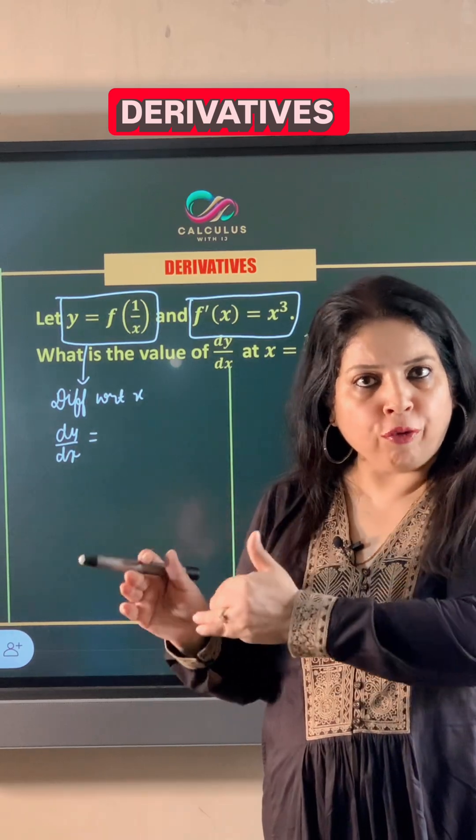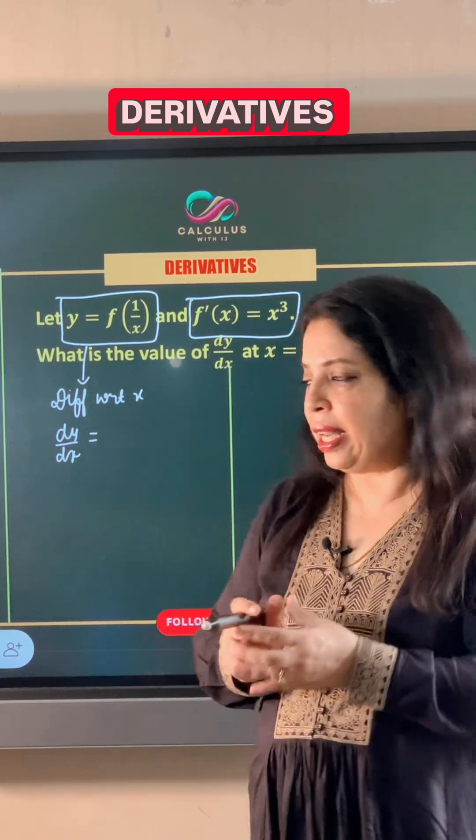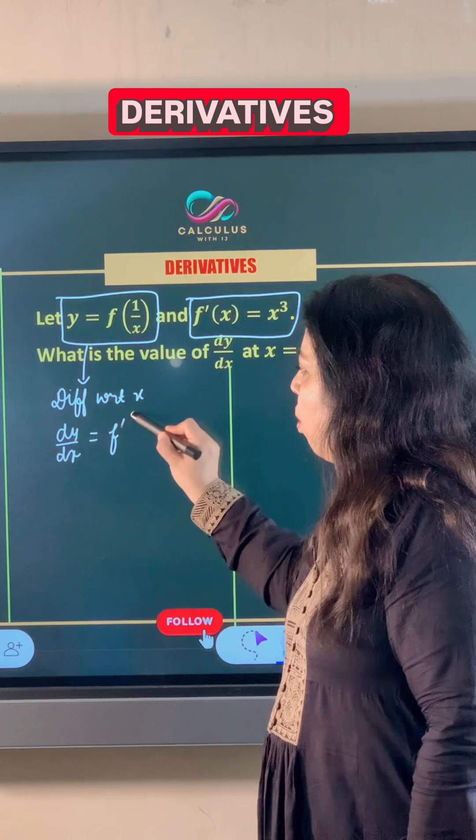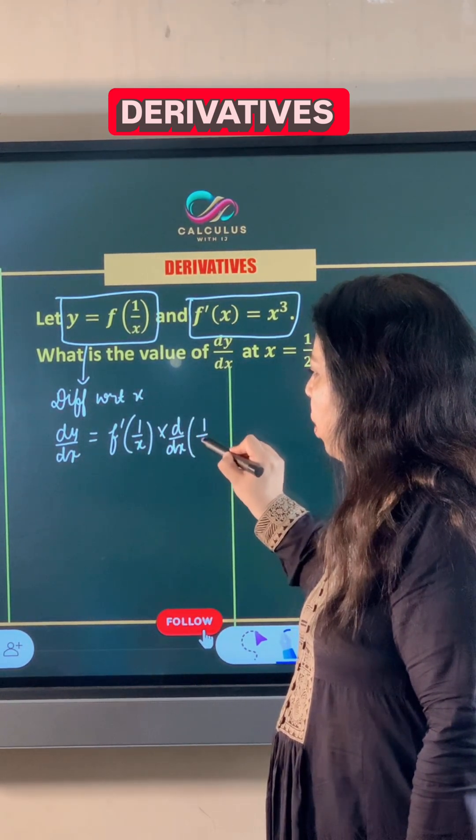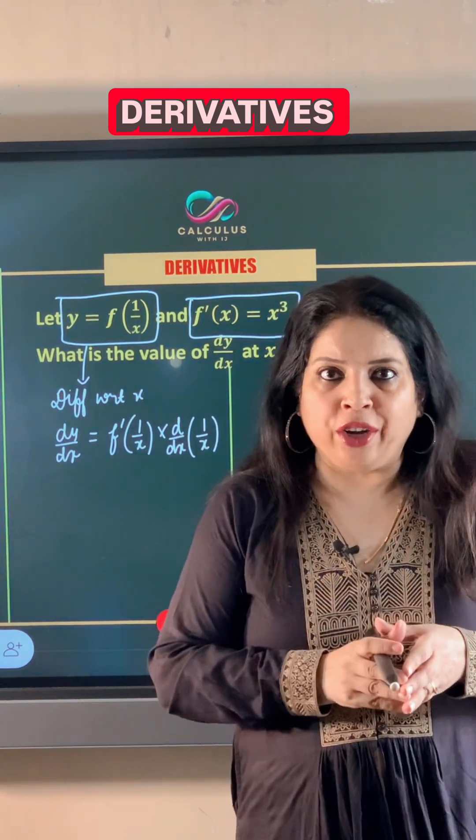But we have f of 1 by x, so its derivative will be f dash of 1 by x and along with this we will also take derivative of 1 upon x according to chain rule.